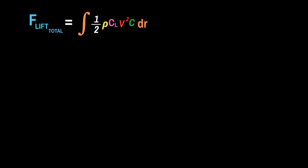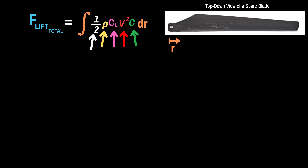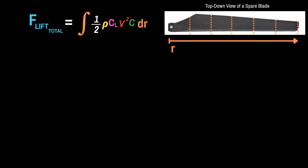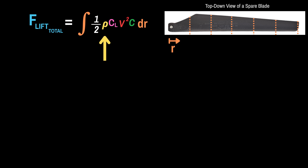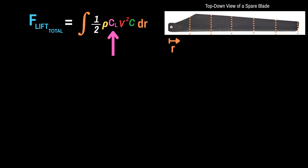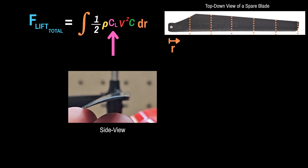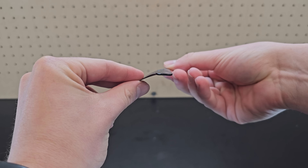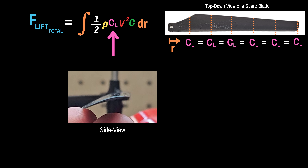Before I can actually integrate, I need to make sure each term is expressed as a function of radius, to account for the fact that some terms change as you go along the blade. One half is a constant, and the density of air is also constant — the same no matter where you are along the blade. I can look up this value and see it's 1.1 kilograms per meter cubed for air at about 1000 meters above sea level, which is where the trial will happen. The lift coefficient only depends on the cross-sectional shape, which appears about the same throughout, so I'll also treat it as a constant.